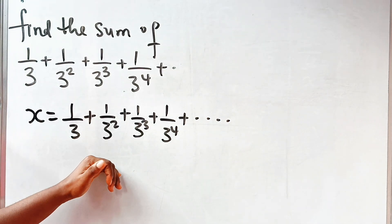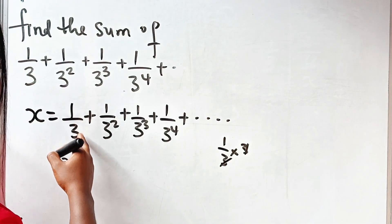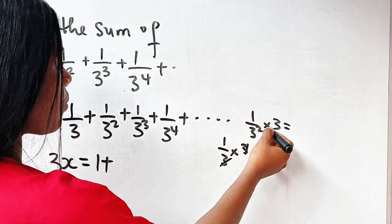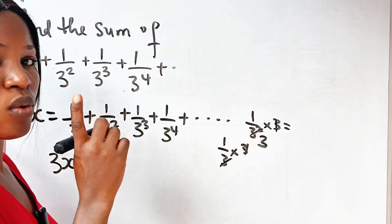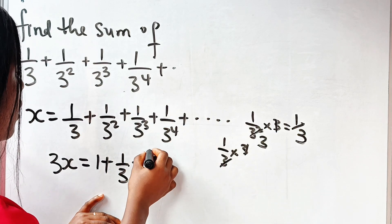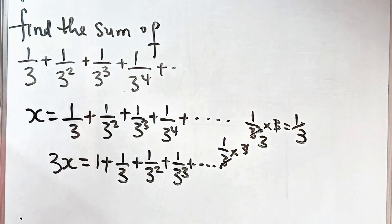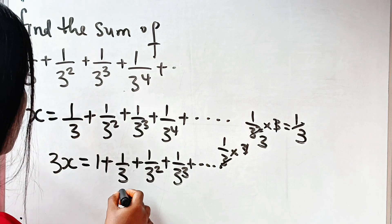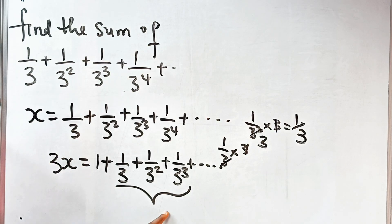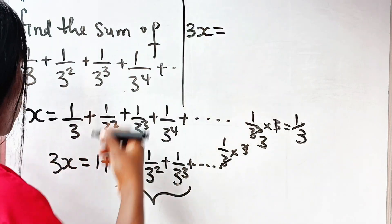If we decide to multiply both sides by 3, we have 3x equal to 1 over 3 times 3. This cancels and we are left with 1. Then 1 over 3 squared times 3 leaves us with 1 over 3. So we have 1 plus 1 over 3 plus 1 over 3 squared plus 1 over 3 to the power of 3, and it continues like that. If you look closely, you will see that from here onward it equals x. Therefore we can write 3x equals 1 plus x.